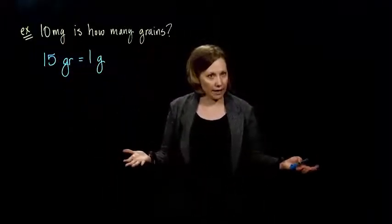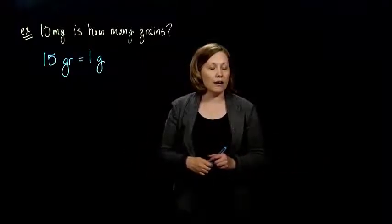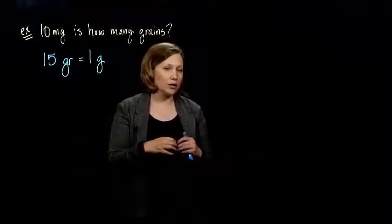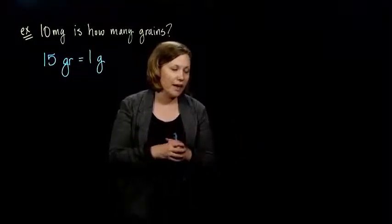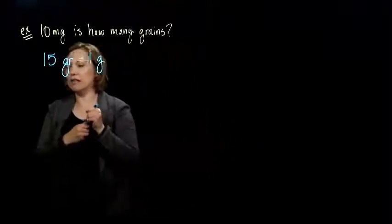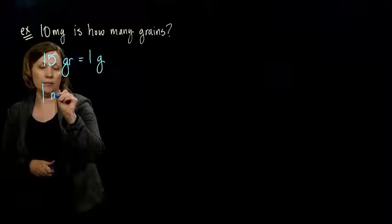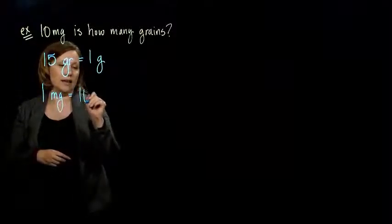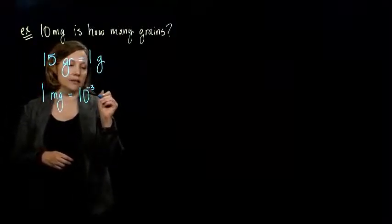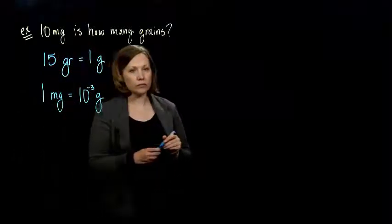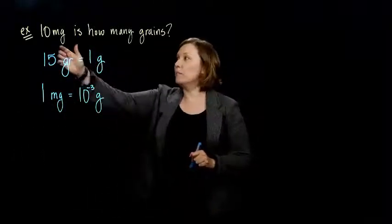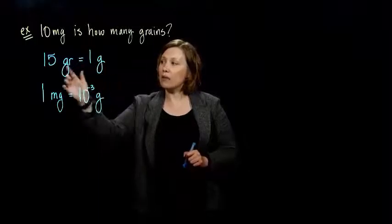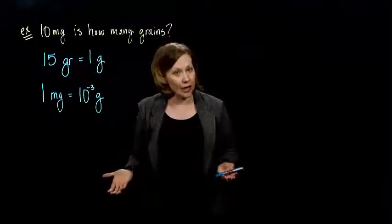We learned that in the section about converting within the metric system. So, I look at my chart for the metric system and I see that 1 milligram is the same thing as 10 to the minus 3 grams. So, now I can take my milligrams and convert them to grams and because I have a relationship between grams and grains, then I can convert to grains.